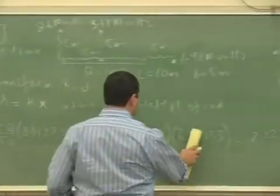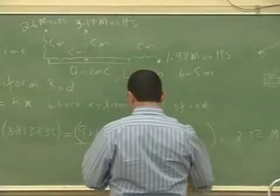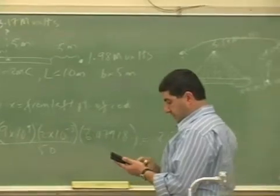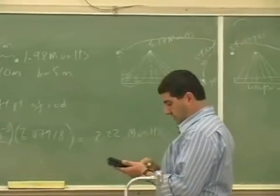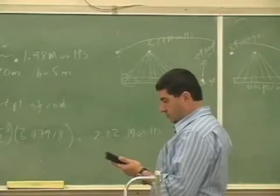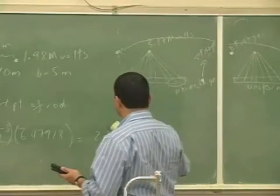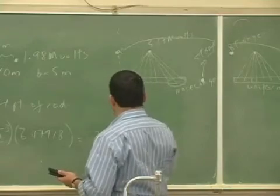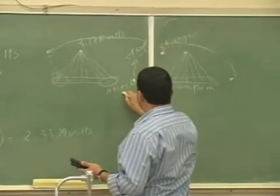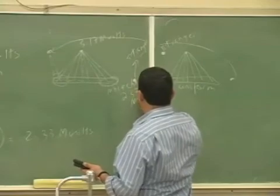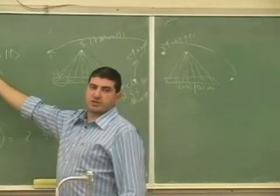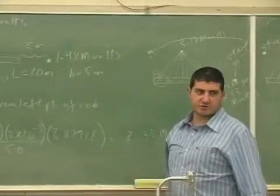And then you bring it here, 6.479, 1, 8, then multiply it by 18 divided by 50, 2.33. It's even stronger, it's even stronger than over there. 2.33 megavolts. And then the uniform rod was 1.98, so quite stronger.